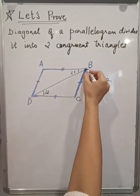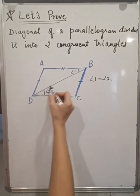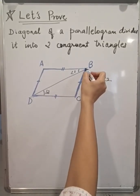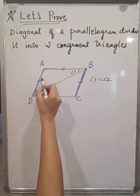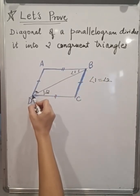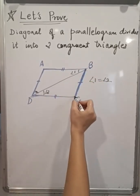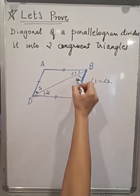Next, BC is parallel to AD and DB is a transversal line to these parallel lines. Hence, this angle ADB is equal to angle DBC. Let's name it 3 and 4. So angle 3 is equal to angle 4.